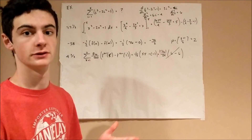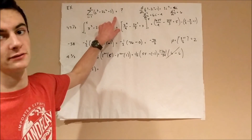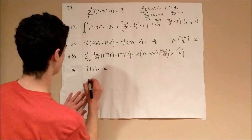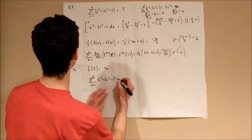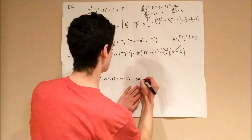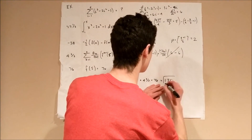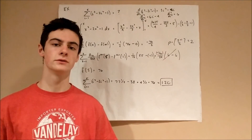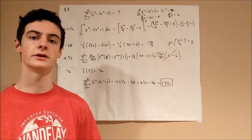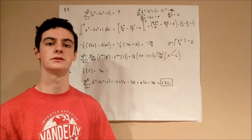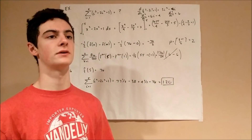Finally, the fourth component is f(5), which is 125 minus 50 plus 1 equals 76. Now summing all four components: 77 and 1/3 minus 38 plus 4 and 2/3 plus 76 equals 120, which is the correct answer. We could have used Faulhaber's formula for this cubic polynomial, but this demonstrates the Euler-Maclaurin approach. For non-polynomial functions, the third term may not terminate, so you would need to verify convergence to zero.